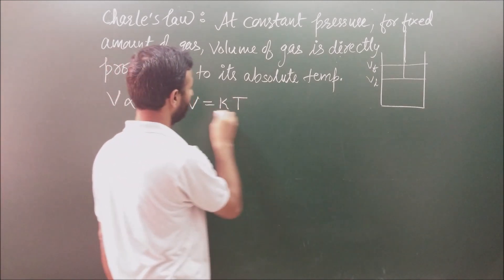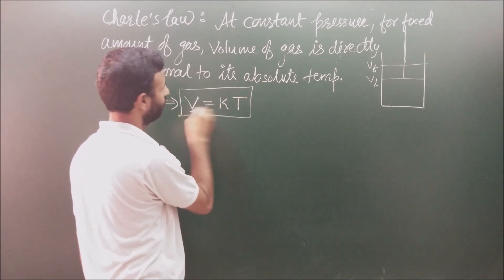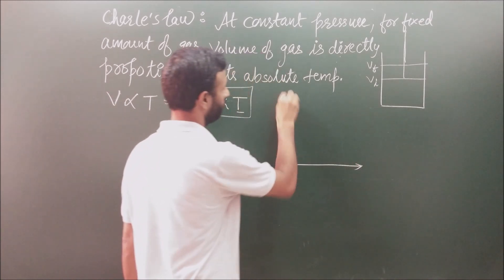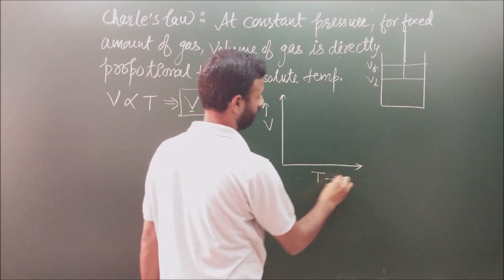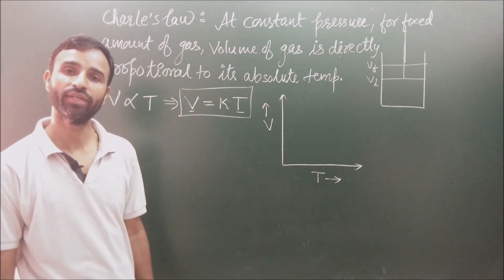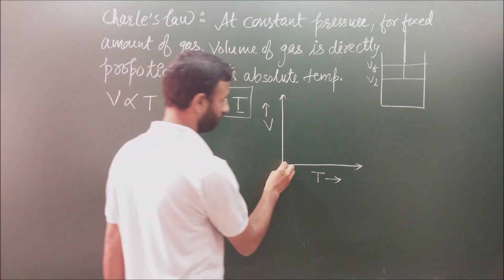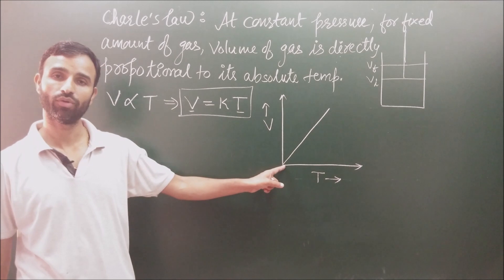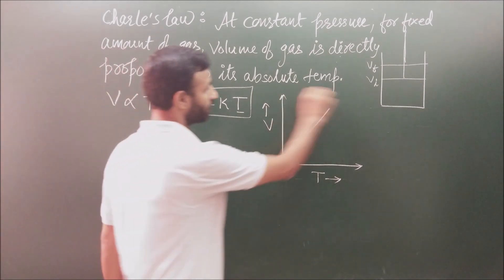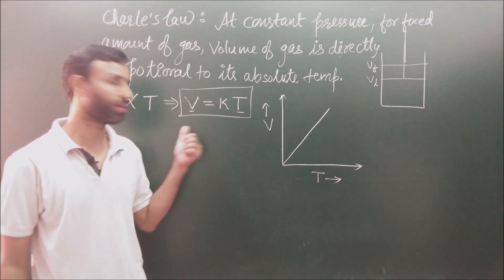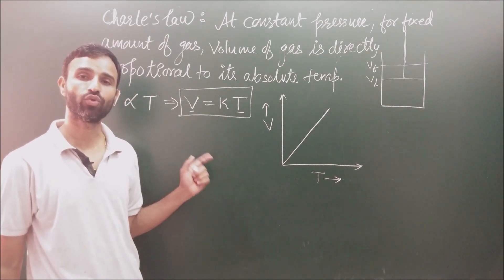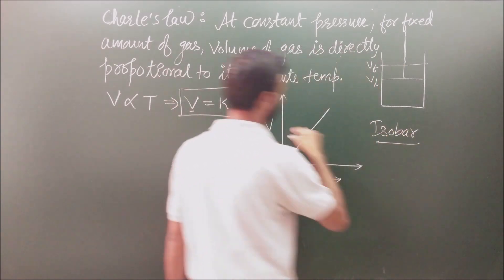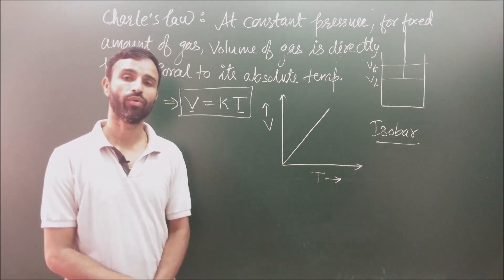If we plot a graph between V versus T, there is a direct relation between volume and temperature. So it is a straight line passing through the origin. This graph is at constant pressure and is called an isobar.